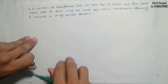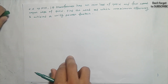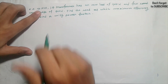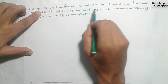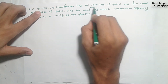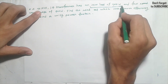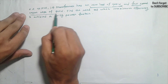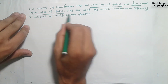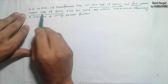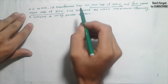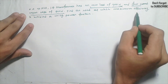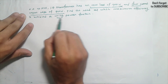We have a fractional load. The single phase transformer has an iron loss, full load, full copper loss. Find the load at which maximum efficiency is achieved at unity power factor.